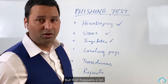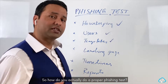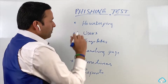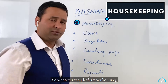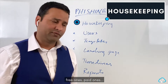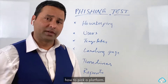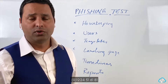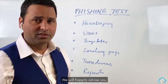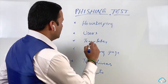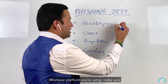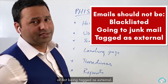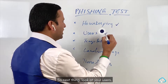That happens a lot. So how do you actually do a proper phishing test? Here are a few steps. First things first: housekeeping. Whatever platform you're using — there are free ones and paid ones — make sure the emails from that server are not being blacklisted, not going to junk mail, and not being tagged.